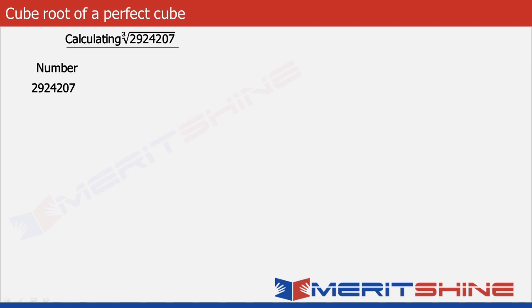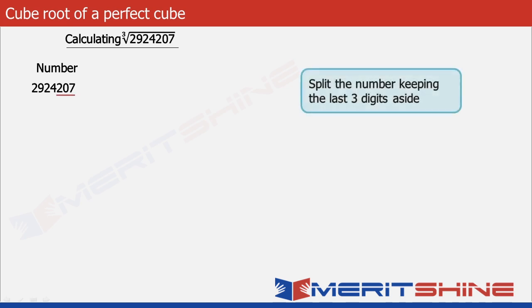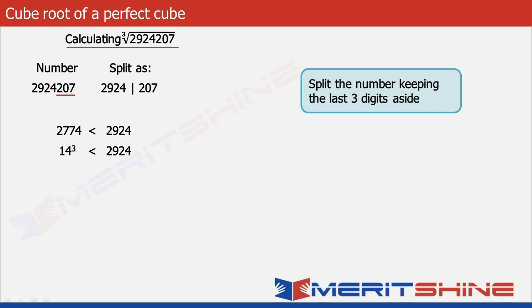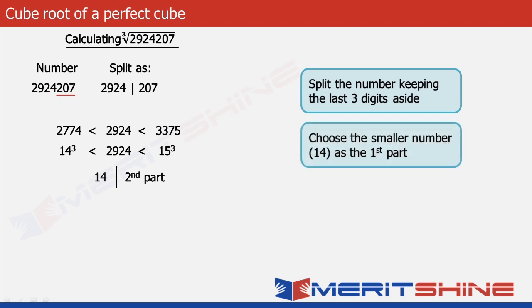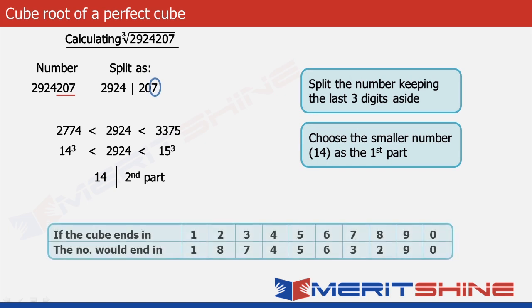Let us try finding the cube root of 2924207 as the final example. We split the number keeping the last three digits aside, getting 2924 in the first part and 207 in the second. We observe that 2924 lies between 2744 which is 14 cubed and 3375 which is 15 cubed. The first part gives 14. The cube ends in 7, so as per the table the number must have 3 as its unit digit. Clubbing these two, our final answer is 143.